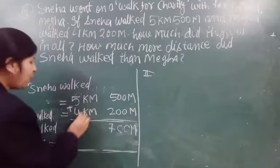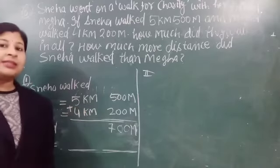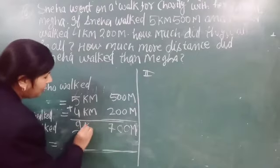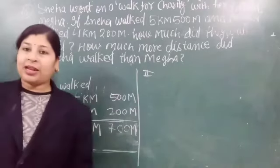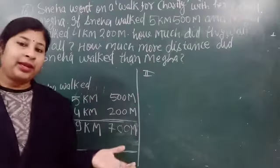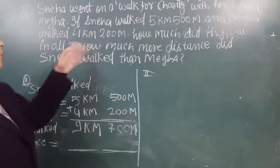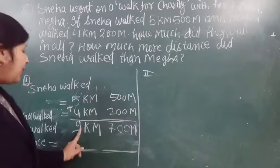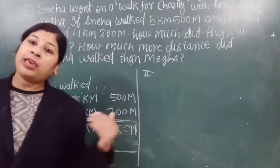Five plus four is nine kilometers. Five hundred plus two hundred is seven hundred meter. So दोनों ने मिलकर 9 kilometer 700 meter walk किया।